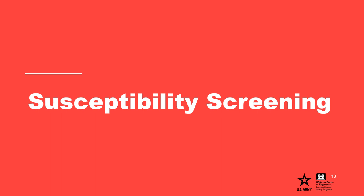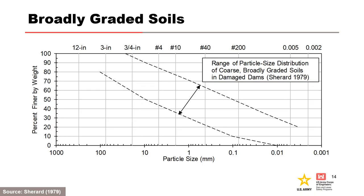A quick examination of the shape of the gradation curve is an easy but important first step. Shavard (1979) plotted a band around gradations judged to be internally unstable from sinkholes and dams of coarse, broadly graded soils, where internally unstable soil gradations usually plotted as nearly straight lines or as curves with only slight curvature within the range shown. Shavard's method is empirically based and designed to identify soils which will not self-filter, which is a different process than internal instability. However, non-self-filtering, very broadly graded soils — for example, glacial soils — that fall under the gradation envelope are also susceptible to internal instability.